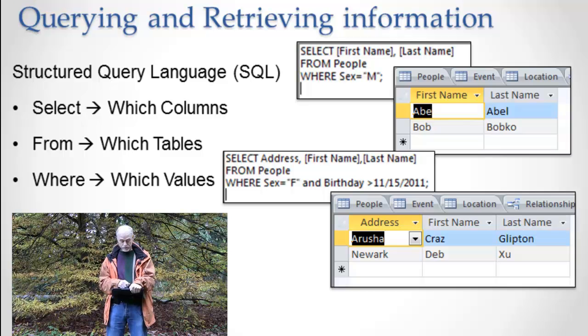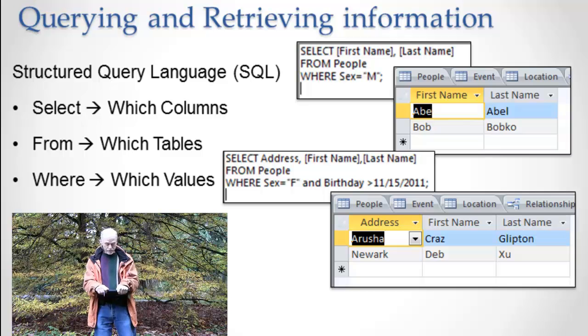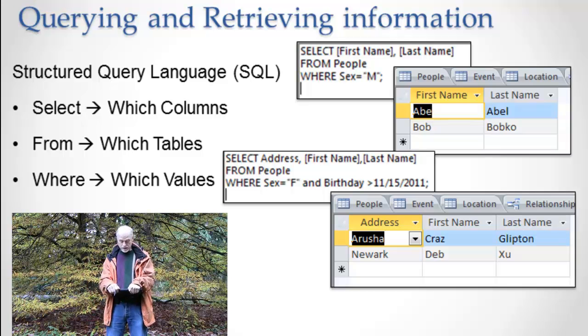I want the ones where sex equals female and birthday is greater. See that where it says birthday greater than? 11, 15, 2011. So these are all the females that have a birthday later than 11, 15, 2011. So 11, 16, 11, 17 and on.